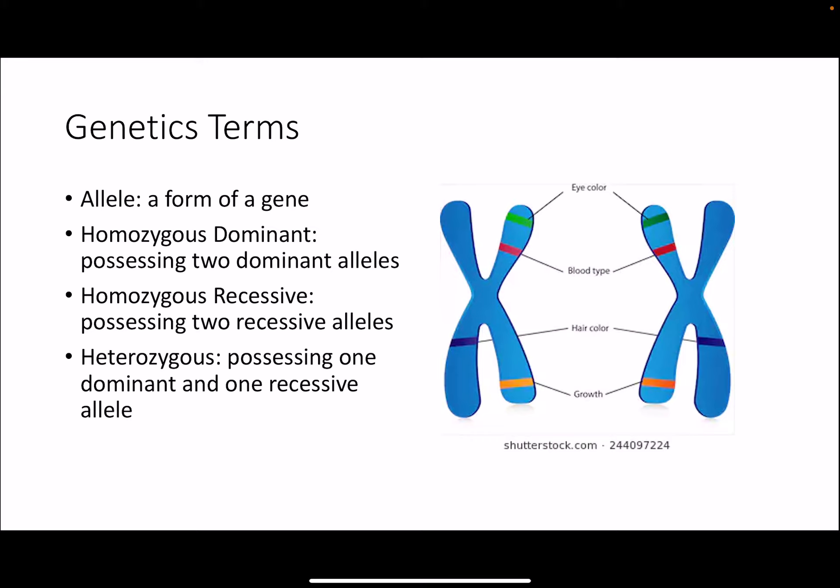The traits that he was studying are referred to as alleles, which are basically alternative forms of a gene. Common examples of this are blood type, hair color, and eye color — all of these are inherited traits.